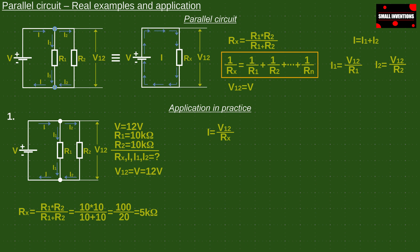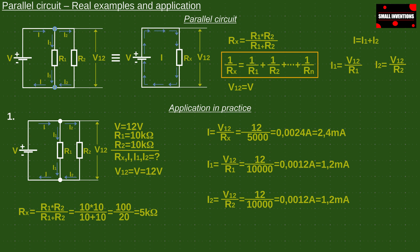First we calculate the total resistance. Then the total current, then the currents I1 and I2. Finally we add the currents I1 and I2 and we have to get the same result. This is proof that we have calculated everything well.